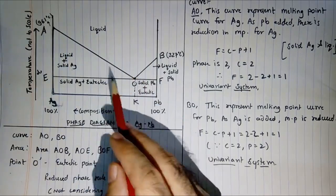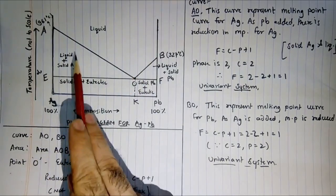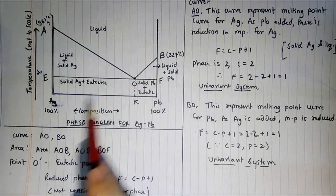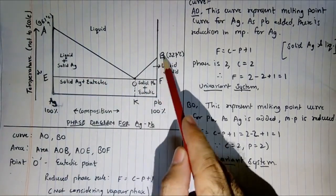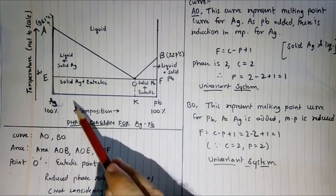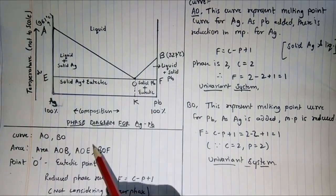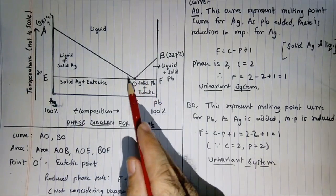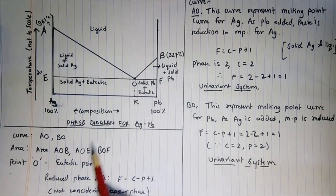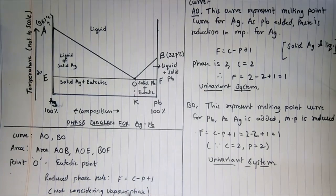The things we want to discuss here are curve AO, curve BO, areas AOE and BOF, and point O — the eutectic point. We are using the reduced phase rule: f = c − p + 1, instead of f = c − p + 2, because vapor phase is taken as constant and is not considered here.